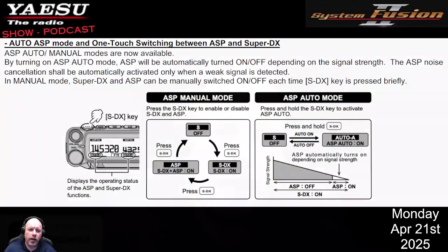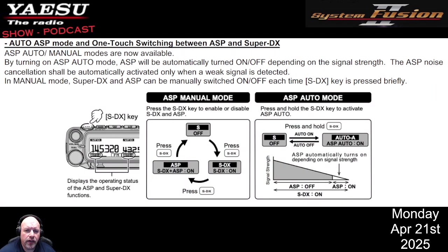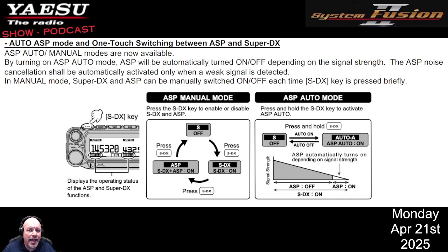The ASP functionality does a great job of cleaning up the signal when there is a weak RF signal strength and weak audio. However, if you have strong RF signal or strong audio, the Advanced Digital Signal Processor is not going to help — and it could almost hinder.